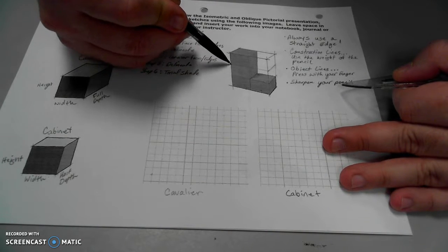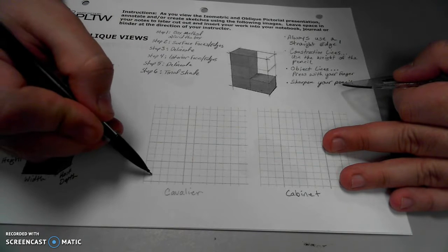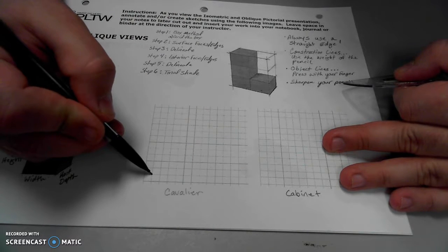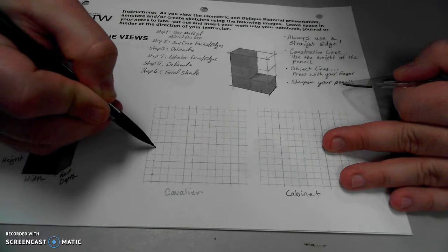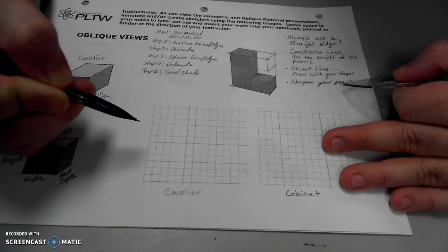I see that there's three wooden blocks tall for this object, and I want to make each wooden block two squares. So one, two, that's one wooden block, three, four, five, six. It'll be three wooden blocks tall.